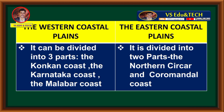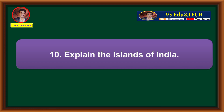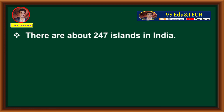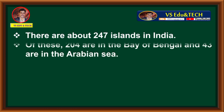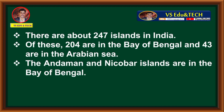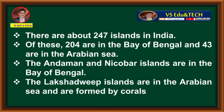Question 10: Explain the islands of India. There are about 247 islands in India. Of these, 204 are in the Bay of Bengal and 43 are in the Arabian Sea. The Andaman and Nicobar islands are in the Bay of Bengal. The Lakshadweep islands are in the Arabian Sea and are formed by corals. These are all about the islands of India.